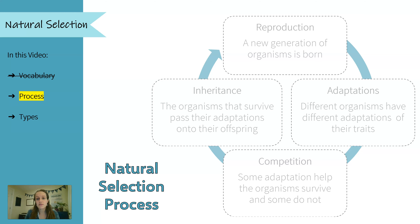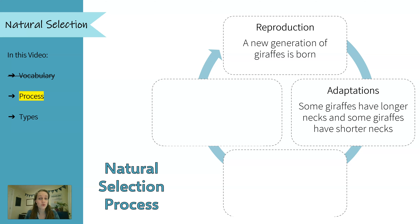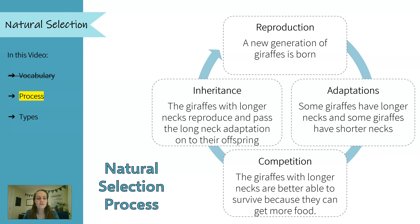So let's look at a specific example — giraffes. This is a pretty simple example. We start with a new generation of giraffes, and some have longer necks and some have shorter necks. The giraffes with the longer necks are better able to survive because they can get food easier. They can get more food, which means that they are healthier, and this has effects that extend beyond just eating food. So these giraffes with the longer necks are the ones more likely to reproduce, and their offspring will get the long neck adaptation.